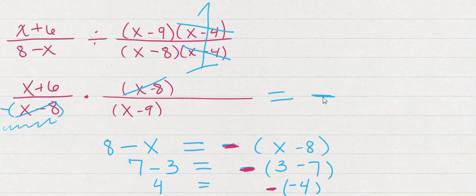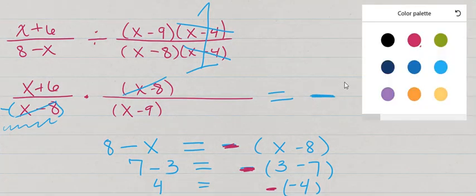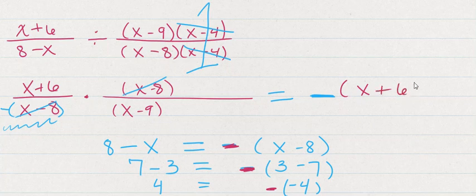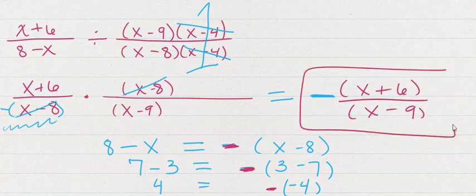So we're left with the opposite of x plus 6 over x minus 9. I think that's probably the answer you're looking for. I hope that this short video helped you, and thanks again for asking such a good question.